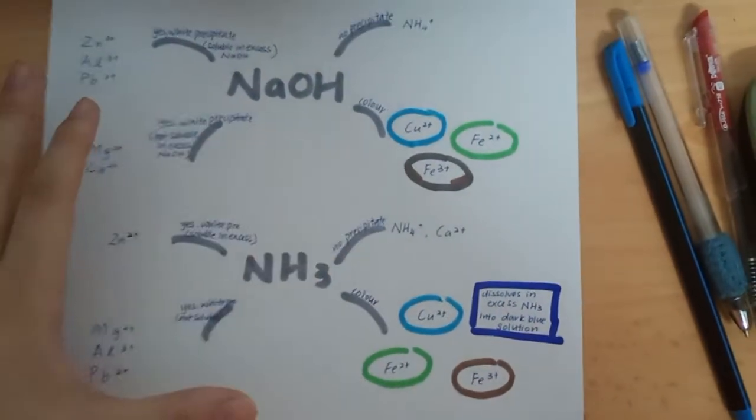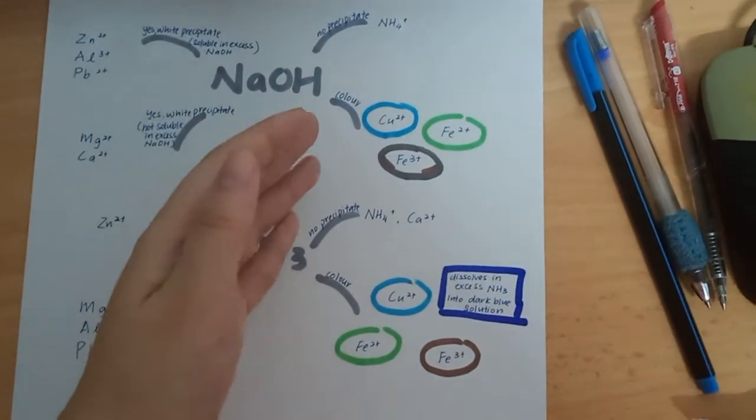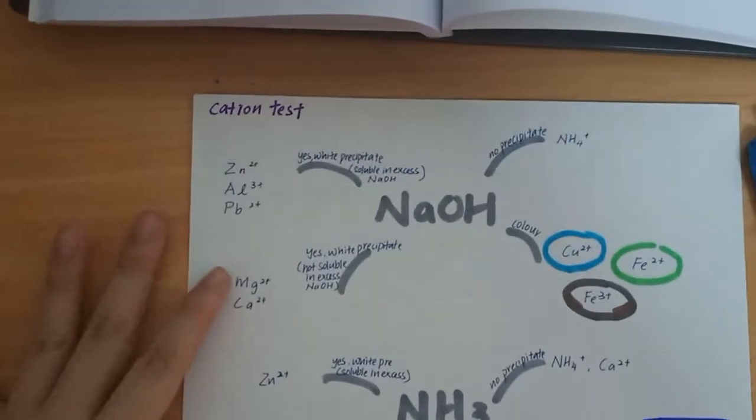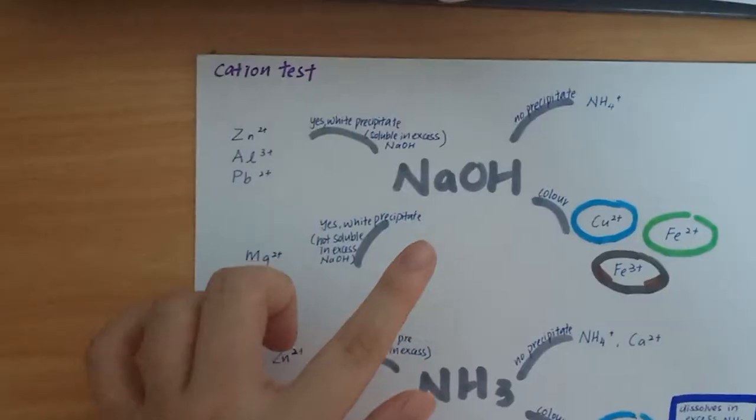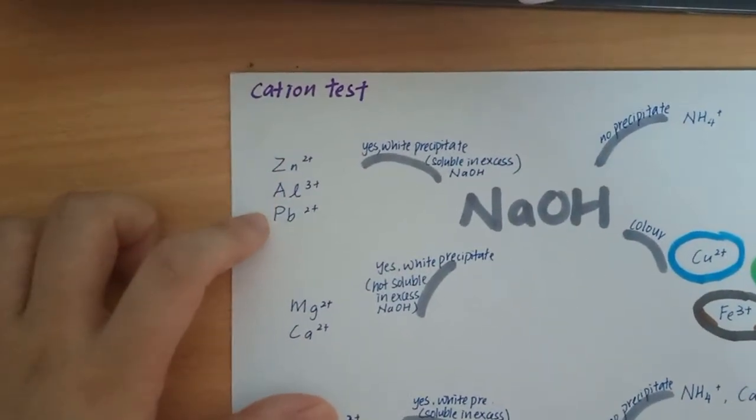Next is yes white precipitate form and it's soluble in excess. So I remember this as ZAP, and it's Zn2+, Al3+, and Pb2+.